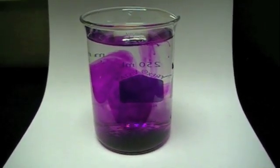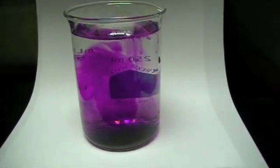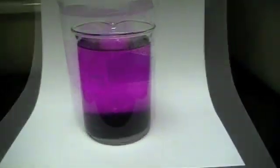If you leave it for a while, you can see that potassium permanganate has diffused across the whole volume of the water, thus turning the entire beaker purple.